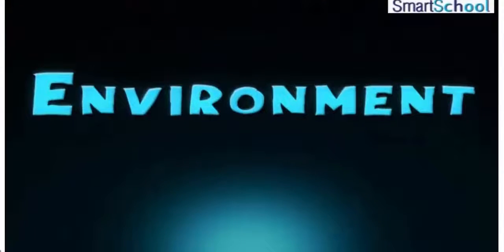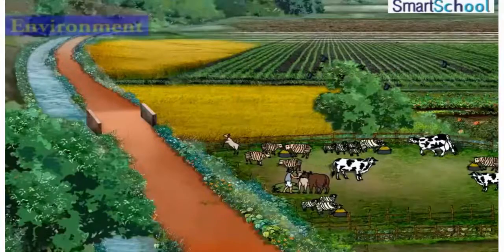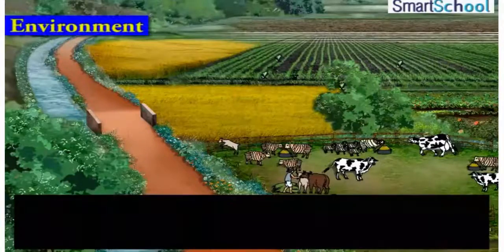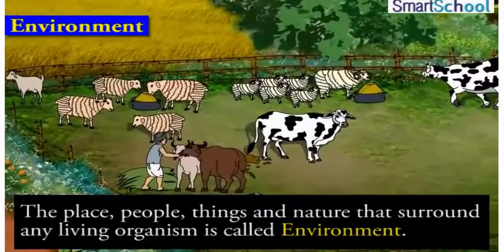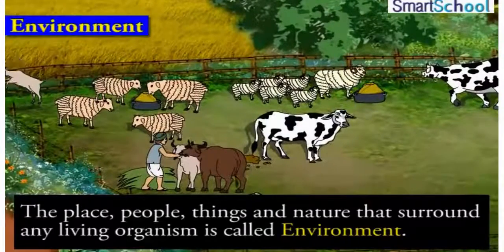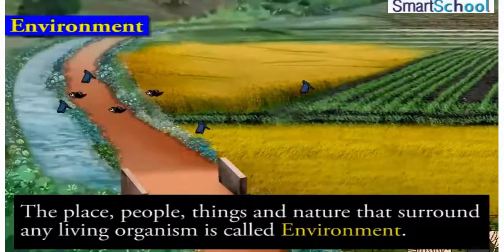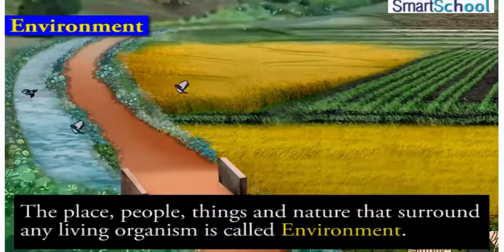Environment. The place, people, things and nature that surround any living organism is called environment. It is a combination of natural and human-made phenomena.